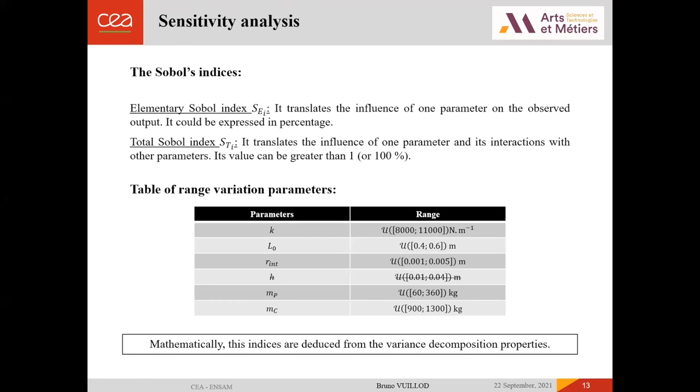The first work in Sobol's analysis is to define the parameters that we want to study and their range variation. So here we took range variation from a physical point of view. And the parameters are defined thanks to a uniform law in this range variation. Mathematically, these Sobol's indices are deduced from the variance decomposition property. I will talk about now in these two following slides.